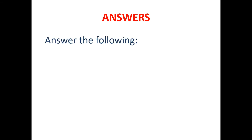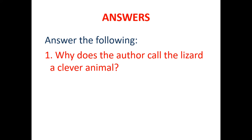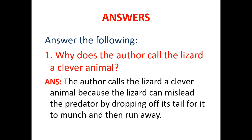Go to the 'answer the following' section. Question one: why does the author call the lizard a clever animal? Because the lizard can mislead the predator by dropping off its tail for it to munch and then run away. It also has the talent to catch insects for its eating. So the author calls the lizard clever because it can mislead the predator by dropping its tail and then run away.